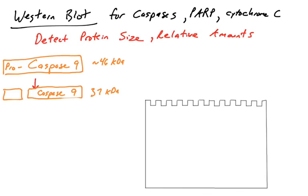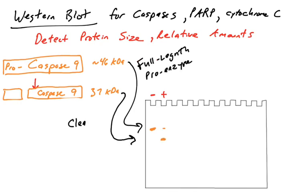If a scientist wants to see whether or not this is occurring, they can use a Western blot. Let's look at these first two lanes. In lane one, no apoptosis is occurring. In lane two, apoptosis is occurring. If you use an antibody that detects the caspase 9 protein, in lane one you will find the full-length protein — the proenzyme version — with no cleaved version. In lane two, if apoptosis is occurring via the intrinsic pathway, the pro version decreases in intensity because it is being cleaved, and the cleaved version increases in intensity because it is now present.